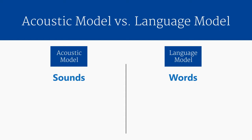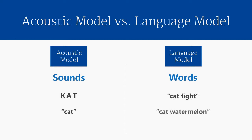As an example, an acoustic model might tell you that the sounds k, eh, and t, when put together, can make the word cat. But a language model can tell you that the phrase "cat fight" is more likely than "cat watermelon." While "cat fight" is a somewhat common phrase, "cat watermelon" is nonsense, and we know this because human beings build language models intuitively.